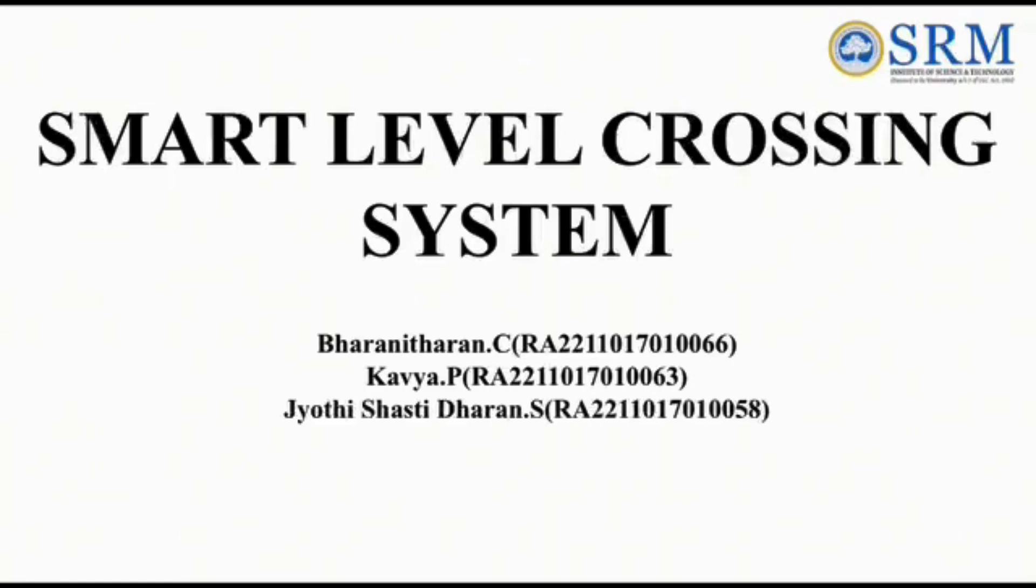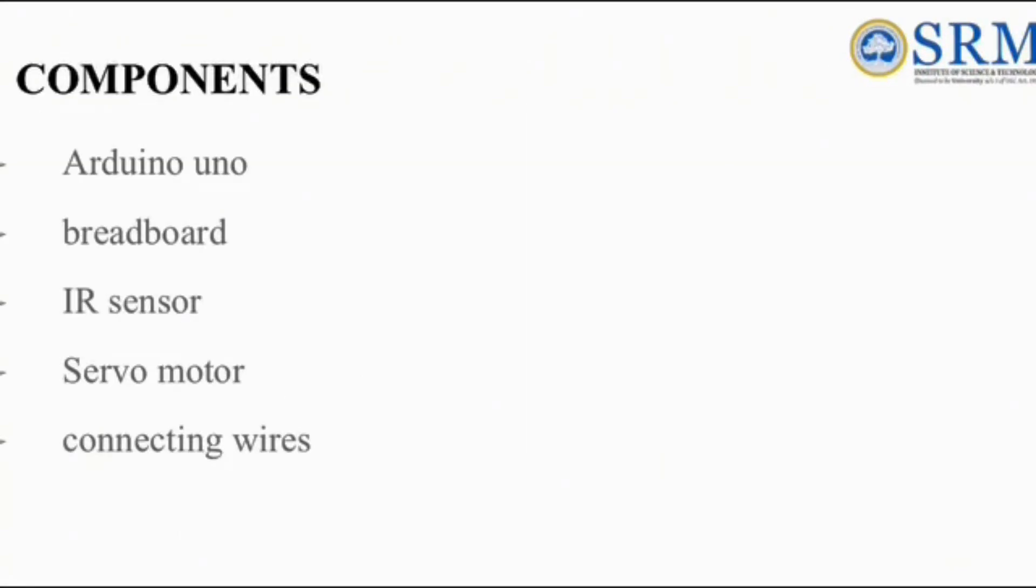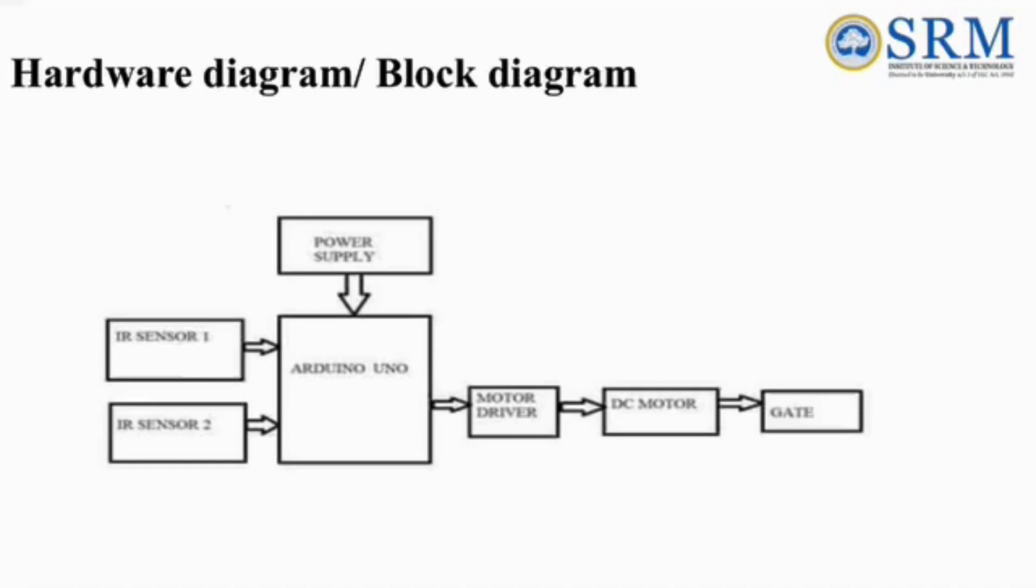Hi everyone, our project title is Smart Level Crossing System. The components are Arduino Uno, breadboard, IR sensor, servo motor, and connecting wires. The working of our project: automatic railway gate systems are crucial for ensuring safety and efficiency in railway transportation.